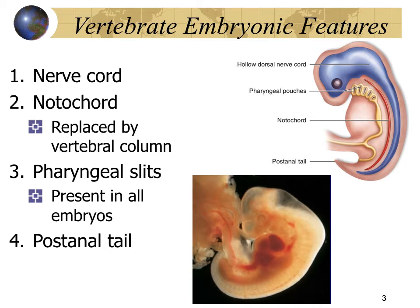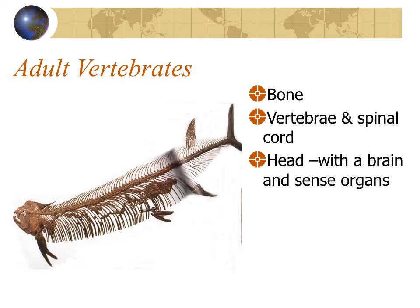Humans are clearly vertebrates. We have the four basic features, shown most clearly when we form as an embryo: a dorsal hollow nerve cord that swells anteriorly to become our brain; early in the embryo we form a notochord, which is replaced by vertebrae; we have pharyngeal pouches that develop into things like the thyroid gland and the larynx; and we have a post-anal tail, visible in the embryo and also seen in our tailbone. We have bone, vertebrae, a spinal cord, a well-developed skull, and sense organs.